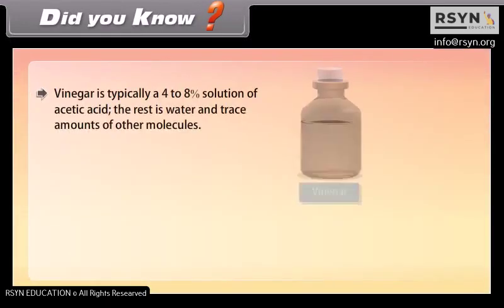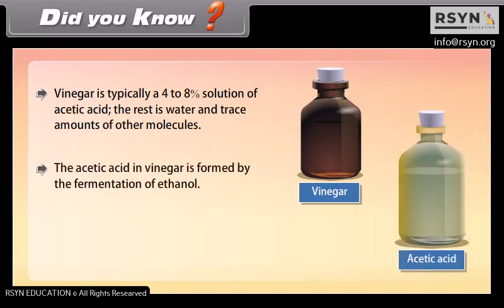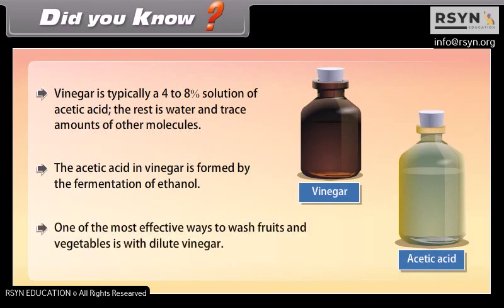Did you know: vinegar is typically a 4–8% solution of acetic acid. The rest is water and trace amounts of other molecules. The acetic acid in vinegar is formed by the fermentation of ethanol. One of the most effective ways to wash fruits and vegetables is with dilute vinegar.